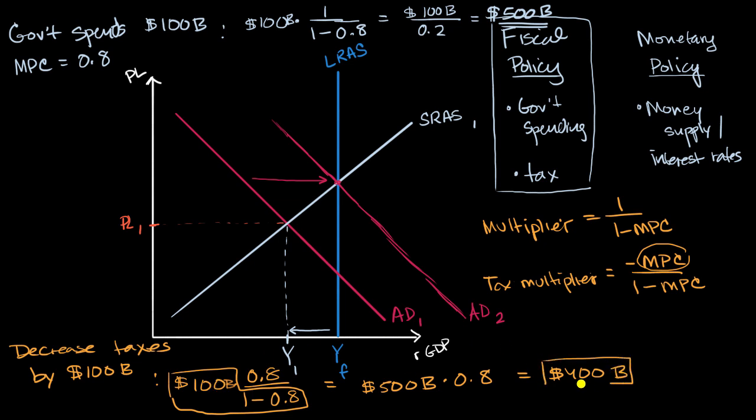And once again, intuitively, where did this come from? Well, if the government spends that 100 billion dollars, that 100 billion dollars gets spent, and then you have the marginal propensity to consume, the person or the people who get it would then spend 80 billion of that, and then the people who get that would spend 64 billion, on and on and on, so it eventually ends up being 500 billion.